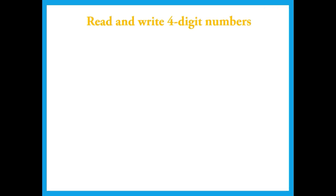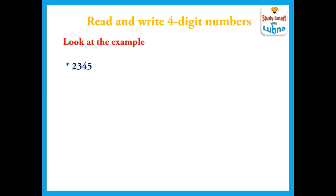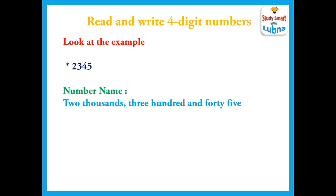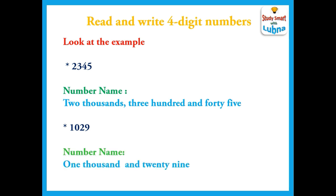Read and write four digit numbers. Look at the given example. Here the number is 2345. It is a four digit number. The name of this number is two thousand three hundred and forty-five. Another example: how can we write the number name of this four digit number? 1029.